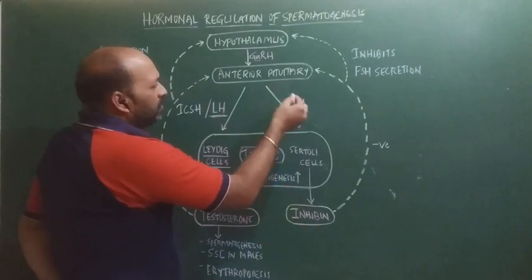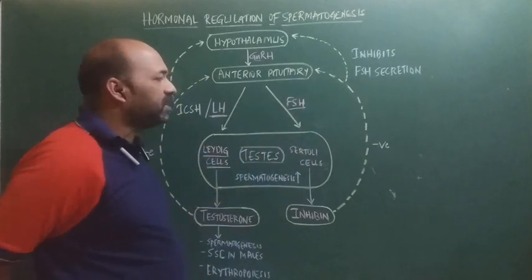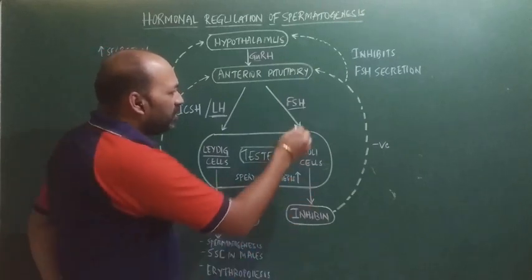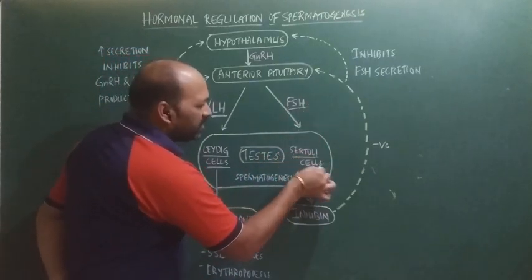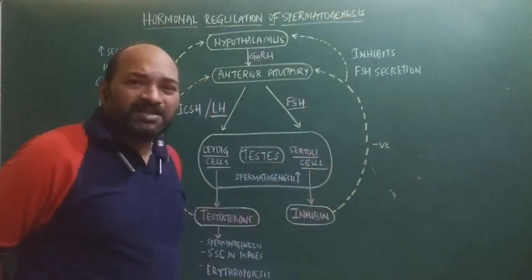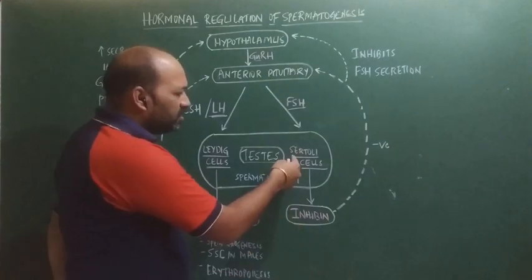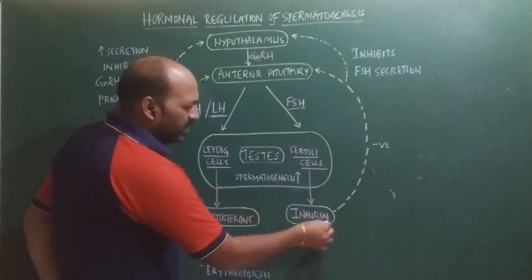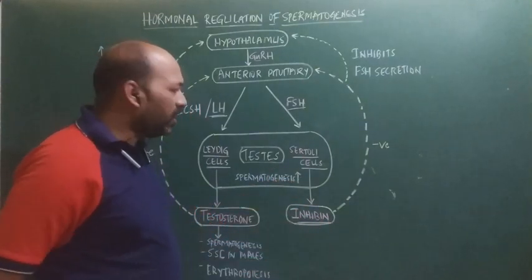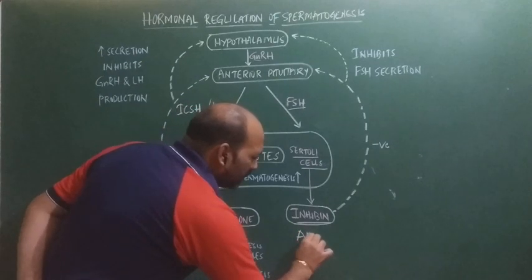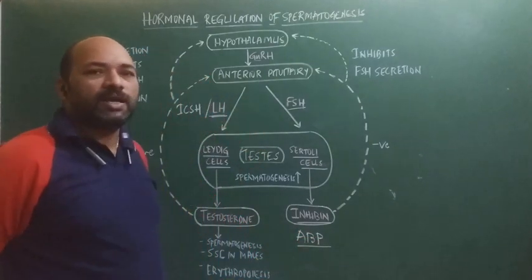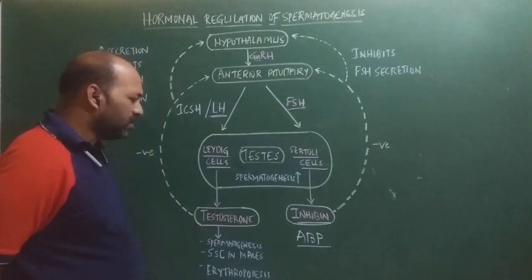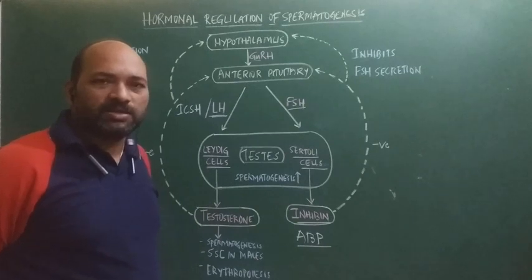The anterior pituitary also releases follicle stimulating hormone (FSH). FSH acts upon the Sertoli cells in the seminiferous tubule. These Sertoli cells then secrete inhibin. Along with inhibin, there is release of another protein called androgen binding protein (ABP).